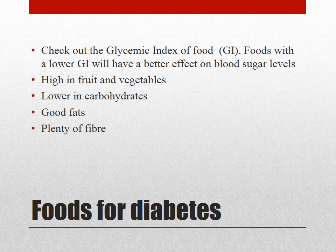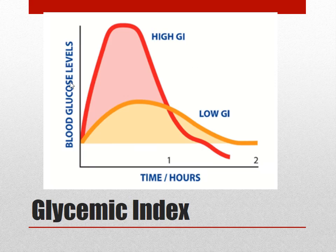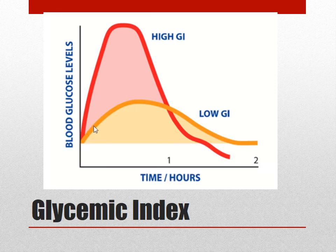Your diet should be high in fruit and vegetables and lower in carbs, particularly simple carbs like sugars, pasta and bread. You should have plenty of good fats and fibre. Looking at the graph, the vertical axis shows blood glucose levels and the horizontal axis shows time. Foods that are high GI give you a very quick spike in blood sugar levels - things like lollies and some fruit - followed by a really quick drop. That high GI food passes through your bloodstream within two hours. Foods with a lower GI give a less pronounced rise but a steady increase and steady decline, providing more sustained energy.